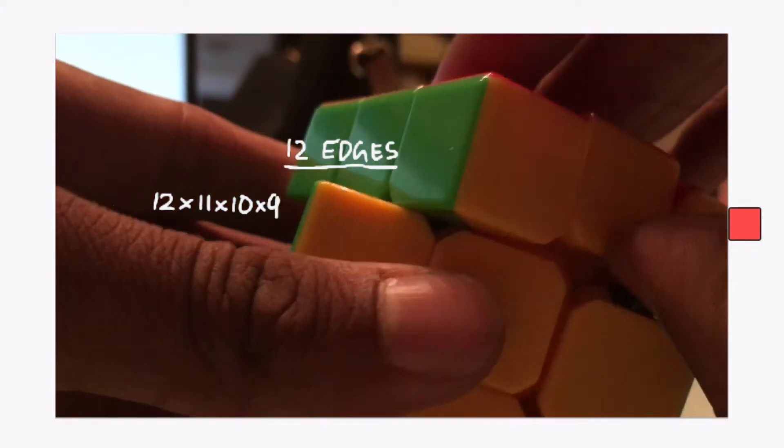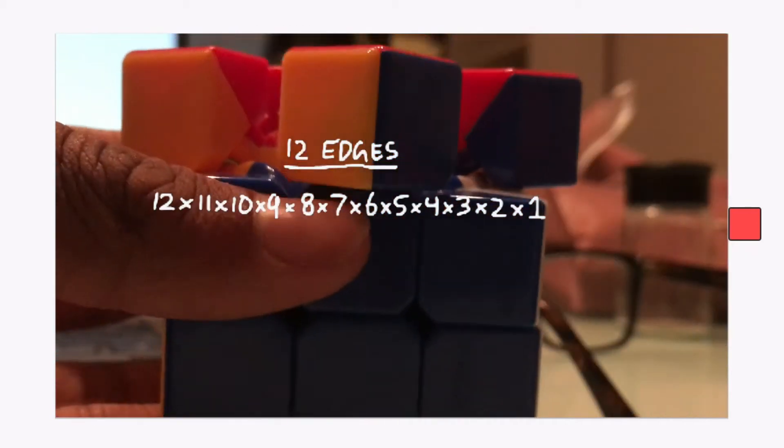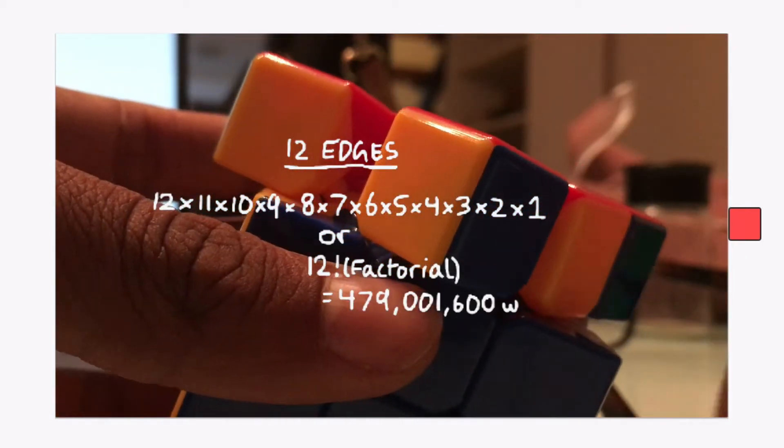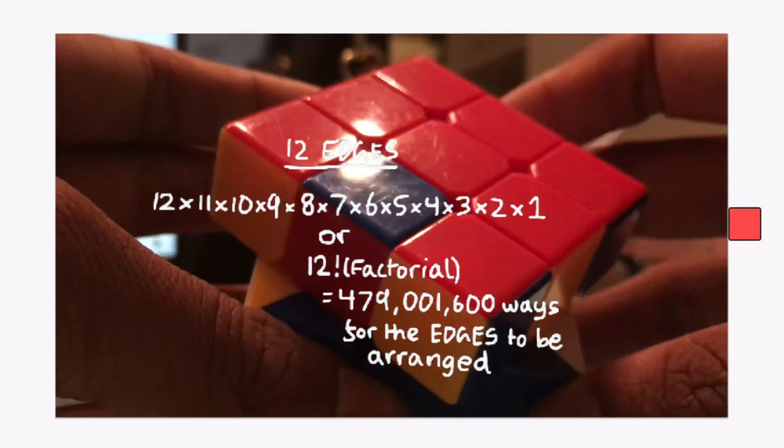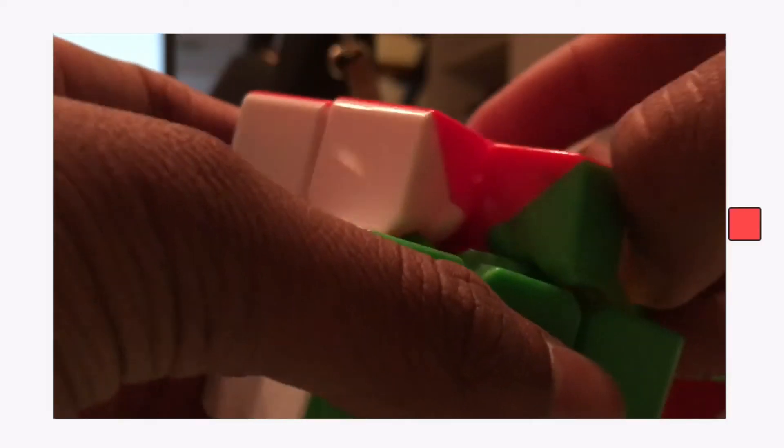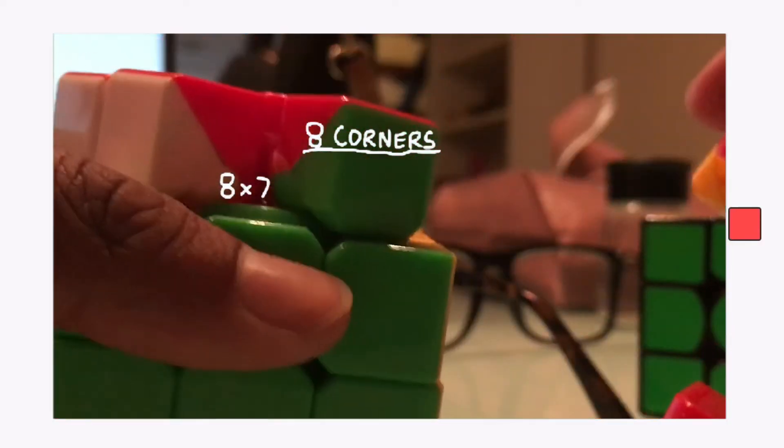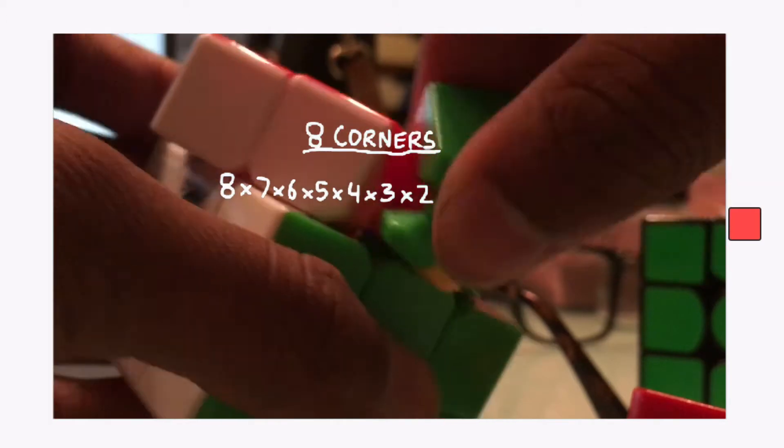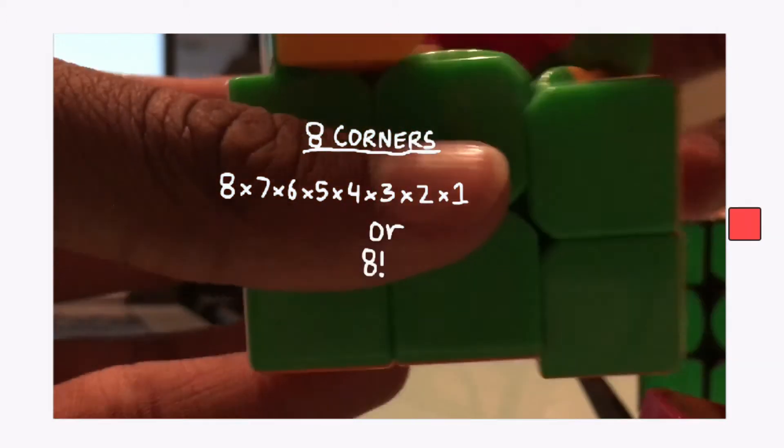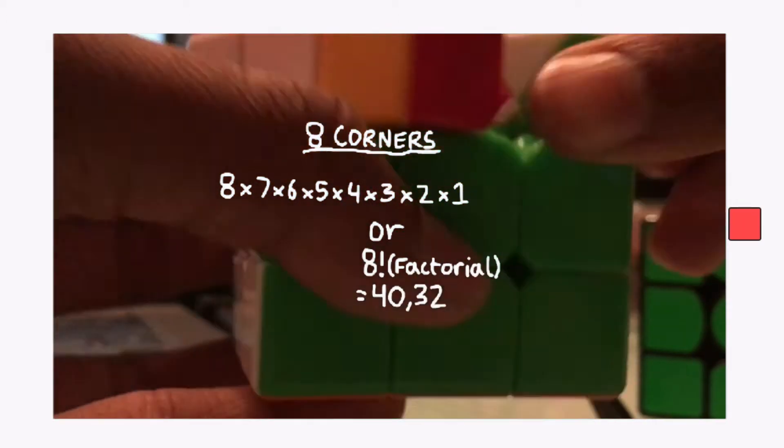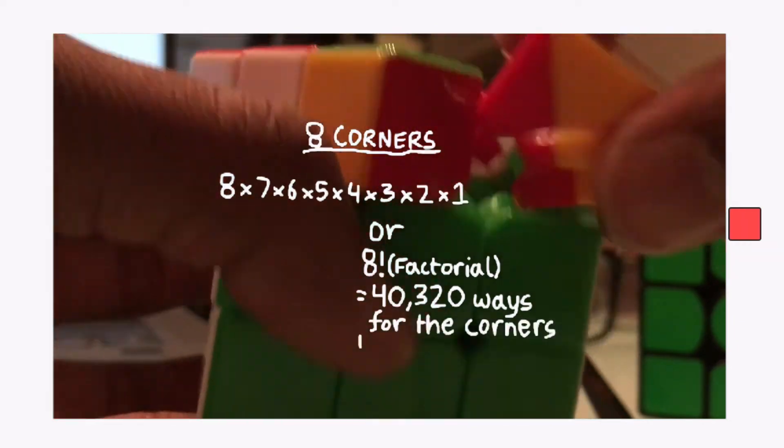There are 12 edges and those positions can be occupied by any of the edge colors. So mathematically, there are 12 factorial ways in which the edges can be combined and permuted, or in simple words, arranged. By applying the same idea with the corners, we find out that there are 8 factorial combinations and permutations for how the corners can be arranged.